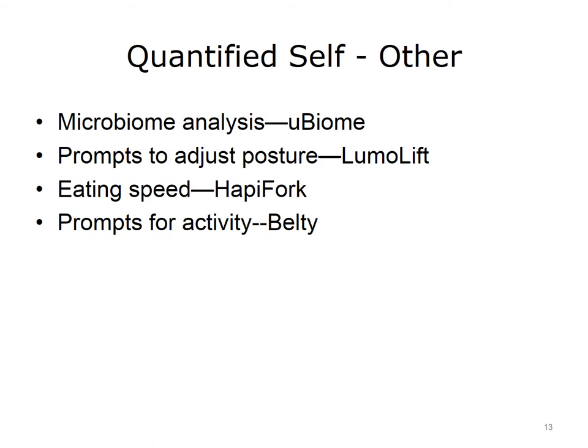U-biome allows sample swabs to be mailed in, with additional survey data collected. The company sequences the user's microbiome and users can compare their data to others. Lumolift has a sensor that attaches to clothing near the collarbone for postural and activity monitoring; it vibrates if the person is slouching to remind them to sit differently. Happy Fork includes sensors in a fork to provide feedback on eating speed. And Belty is a belt buckle sensor that adjusts at mealtimes and signals for activity after long sedentary periods.